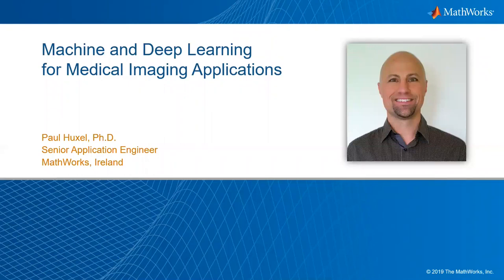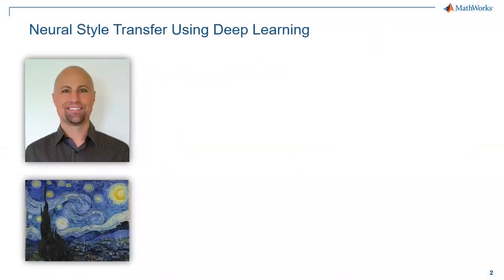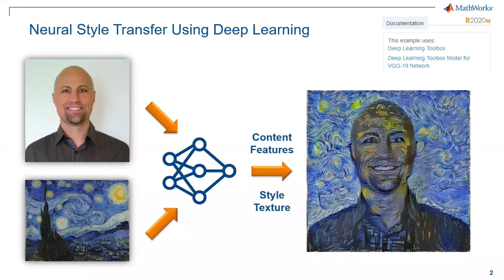One of the examples in our documentation is using deep learning for neural style transfer. I have my picture and also Starry Night by Vincent Van Gogh. I can use a neural network to extract features from the content image — my profile image — and texture from the style image, the Starry Night. The network combines those back together, giving a picture of what I might look like if Vincent Van Gogh had painted me in the motif of Starry Night. We'll talk today about much more practical applications — ones that might actually save lives, as opposed to just being artistic like this.